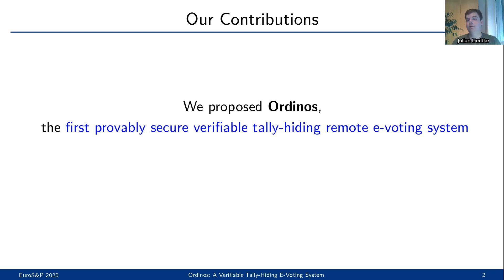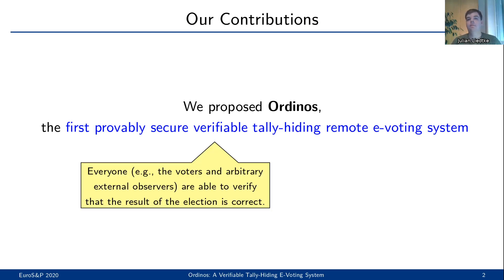Let us briefly discuss what these properties are. Verifiability means that parties are able to check whether the claimed result of the election is correct. This check can be performed by individual voters, but it is not restricted to participants of the voting protocol. Thus, everyone can verify the election result.